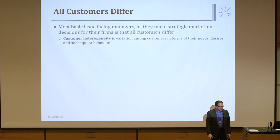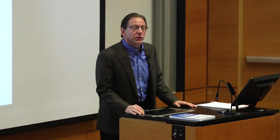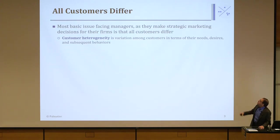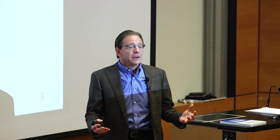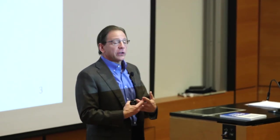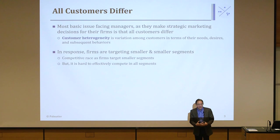All customers differ. The general idea is that for pretty much all marketing products and services, customers' needs and desires vary. We define customer heterogeneity as the variation among customers in terms of their needs, desires, and subsequent behaviors. Because customers' needs and desires change for products — for example, bottled water: even though it's H2O, it's the same water, customers have different needs. Where it comes from — Canada, Hawaii, Colorado? What kind of bottle is it put in? They're varying across their needs.